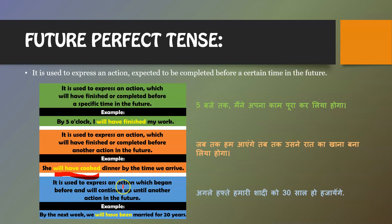Future perfect tense is also used to express an action which began before and will continue up until another action in the future. For example, 'By next week we will have been married for 20 years.' Now let's look at the sentence structure.